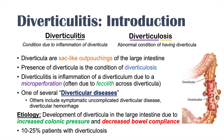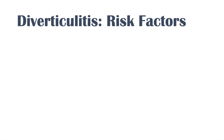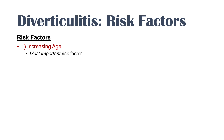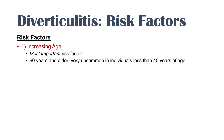Some of the risk factors of diverticulitis include increasing age — this might actually be the most important risk factor. As we age, bowel compliance can decrease and other risk factors can accumulate over time. Generally speaking, 60 years and older is when you're going to see diverticulitis. It's very uncommon in individuals less than 40 years of age.